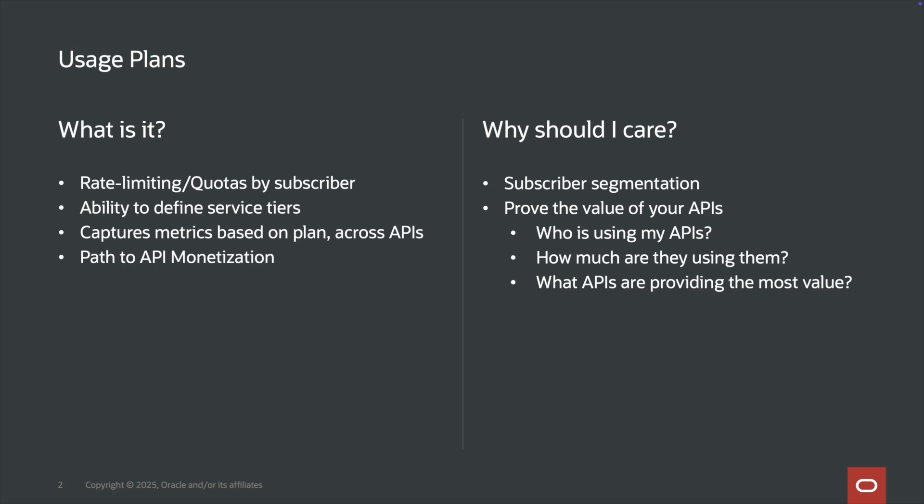Let's first understand what is a usage plan. A usage plan is something we can use to create rate limiting and create quota based on the subscriber. With that we get the ability to define the service tier, and we can capture metrics based on the plan and across all the APIs, and it is the path towards API monetization.